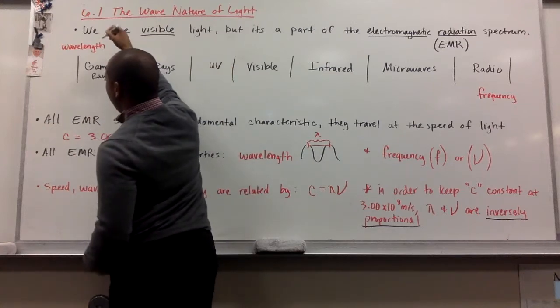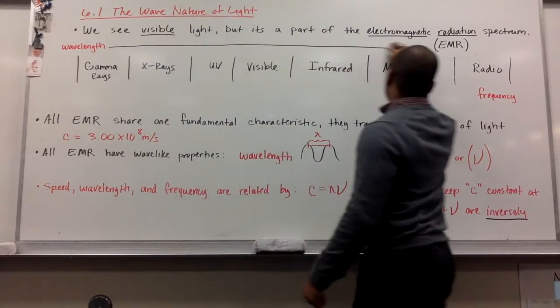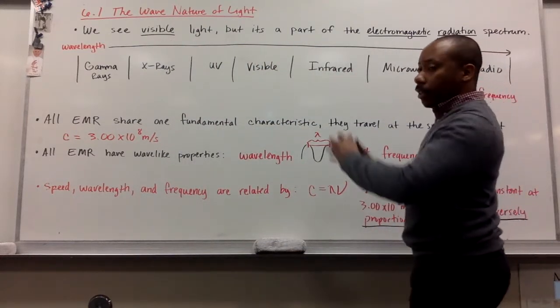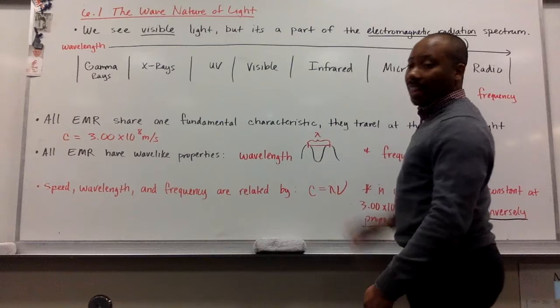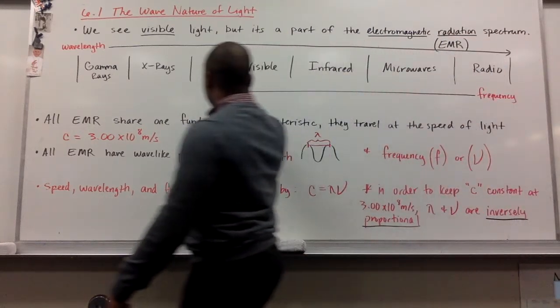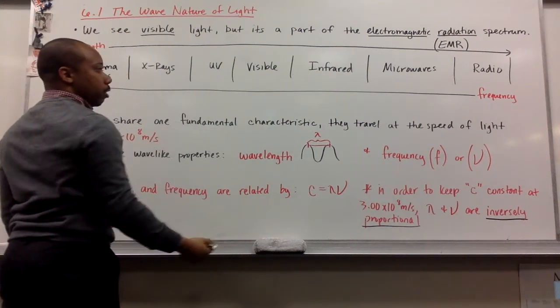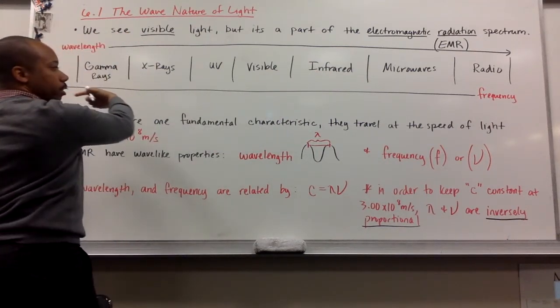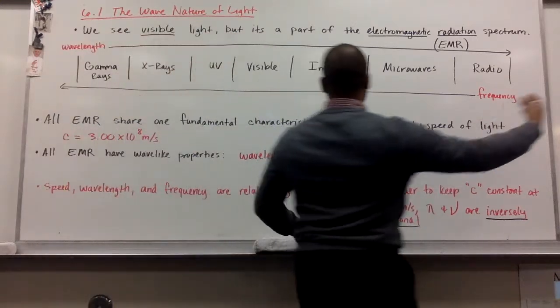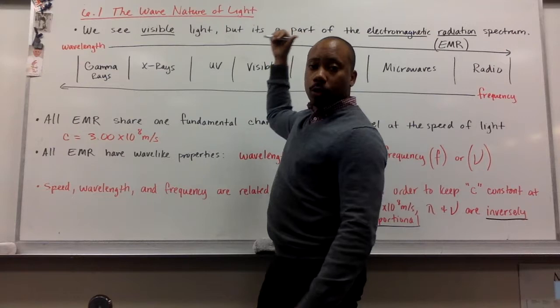As we go from gamma rays to radio waves, our wavelength increases. At that same time, our frequency decreases. So going this way, frequency decreases. Going this way, frequency increases. We have an increase in frequency this way, an increase in wavelength that way. But going the same way, they're opposites.